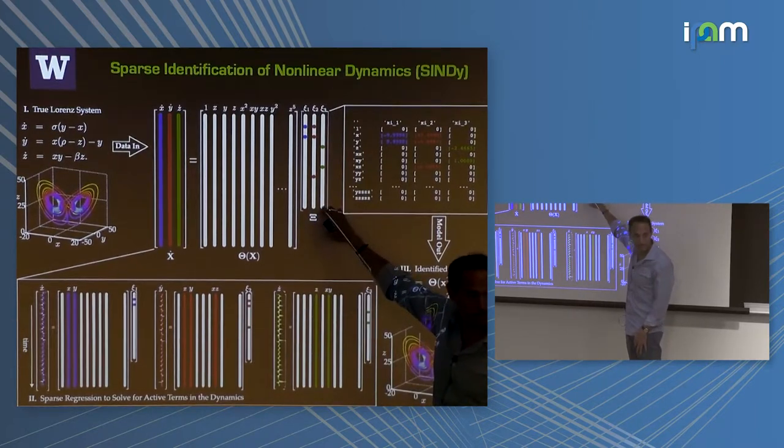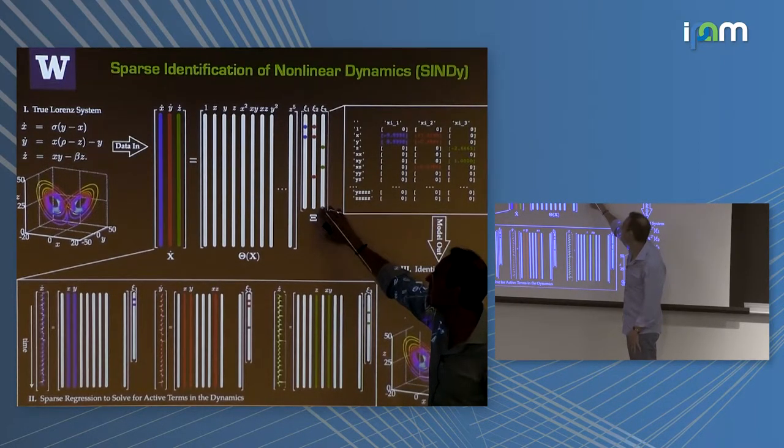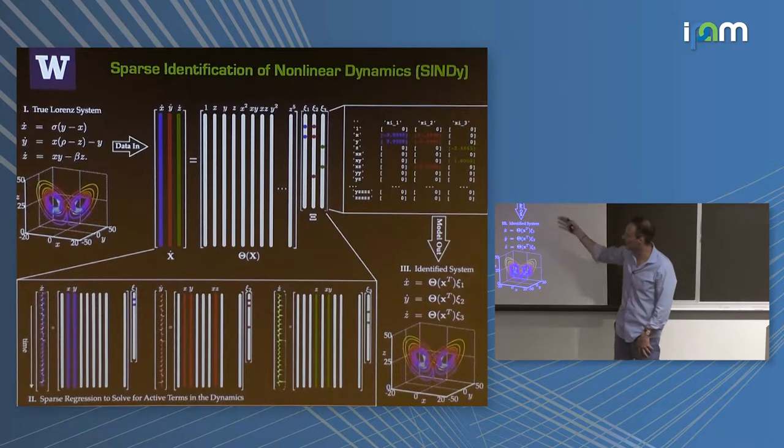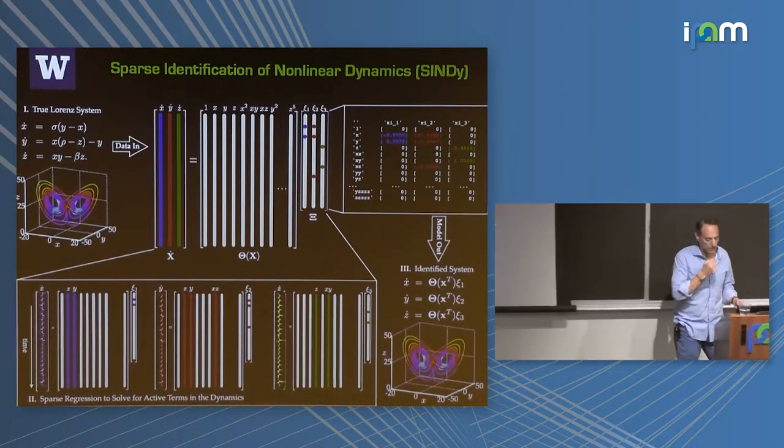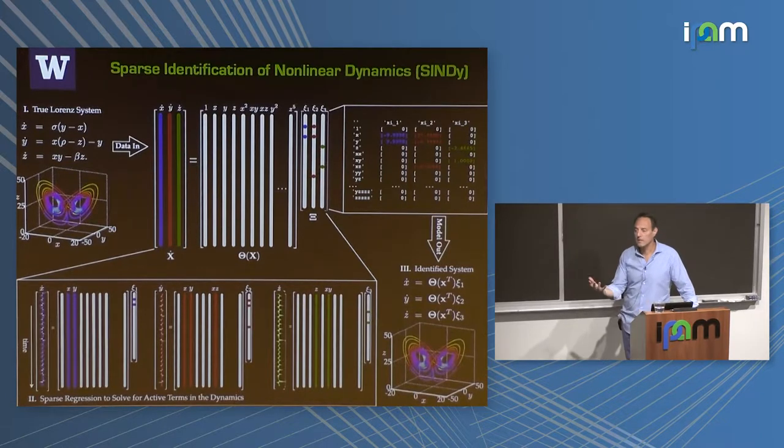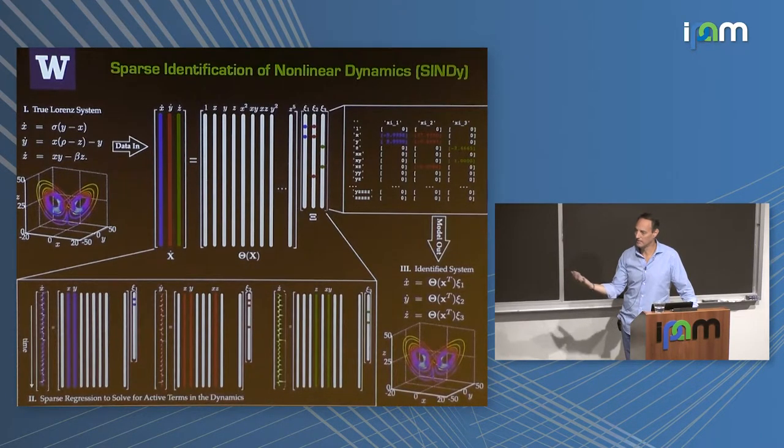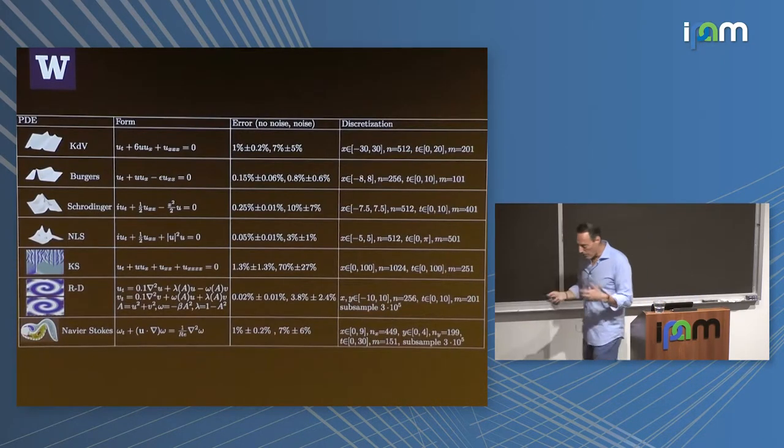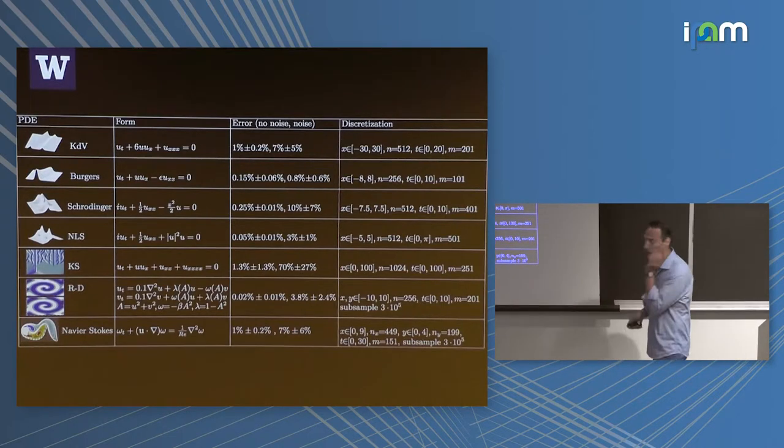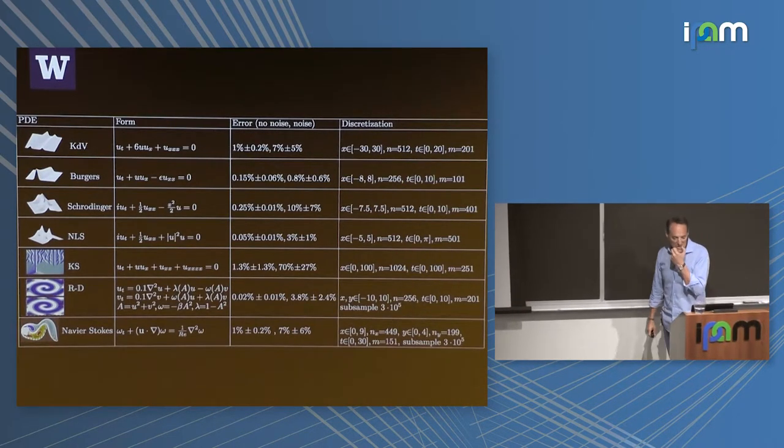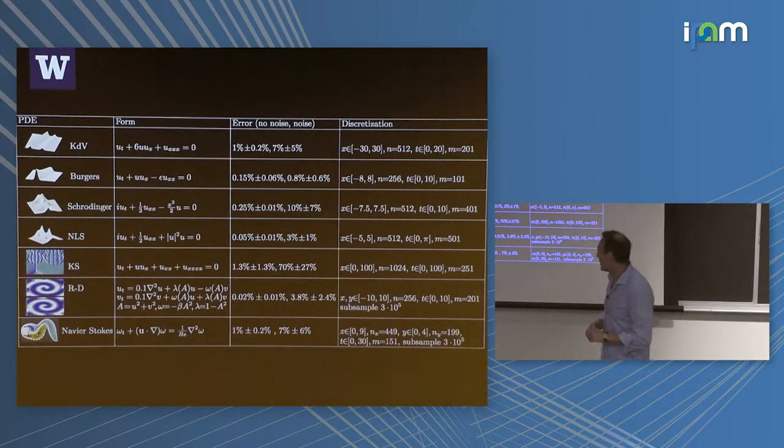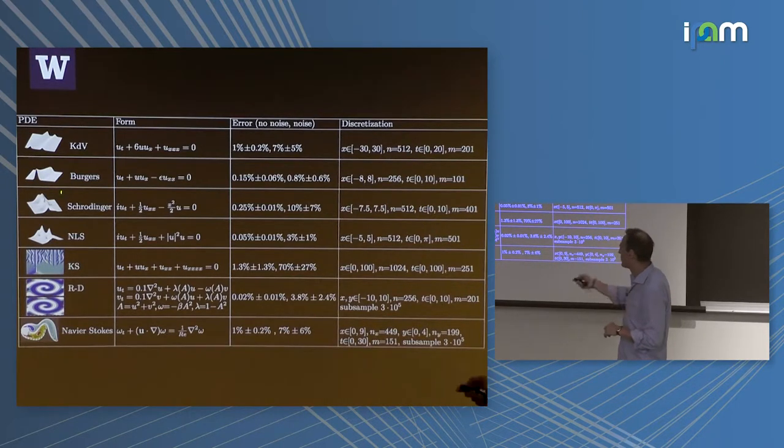And when you do this, then you want to promote sparsity. We do this through least square thresholding. And those dots show you the non-zero coefficients. Everybody else turns off. Those are the ones that are there. What do you get back? Exactly the Lorenz equations. So that's it. Ax = B. That's not that hard. That's a fairly simple architecture. You can do a lot with this, including going to things like this, where you can start saying, all right, I want to start doing PDE, spatial temporal systems.